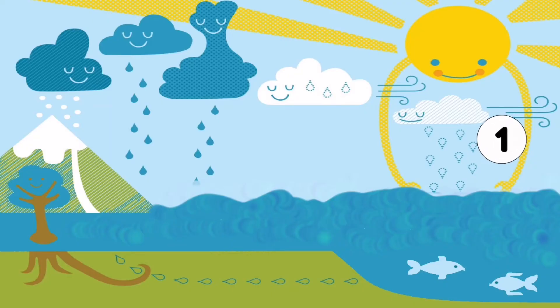First, the sun heats up the water in seas, oceans, rivers, lakes or snow and mountain tops. Water turns into water vapor, a gas which we can't see and rises up in the sky. This process is called evaporation.